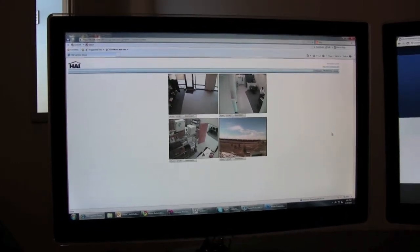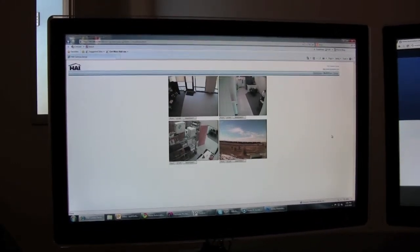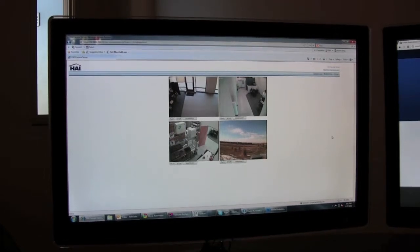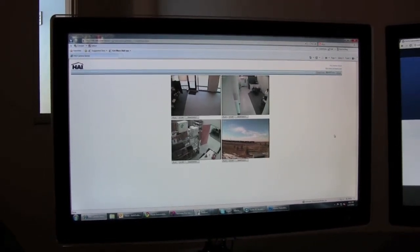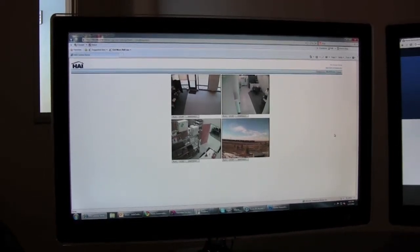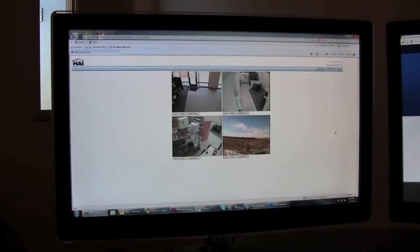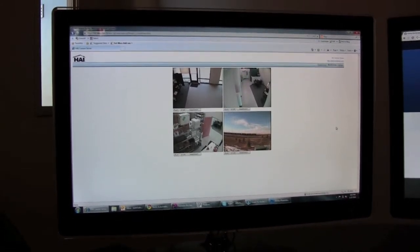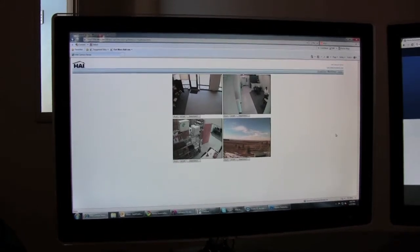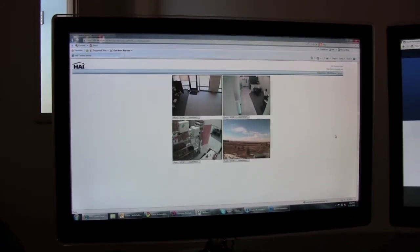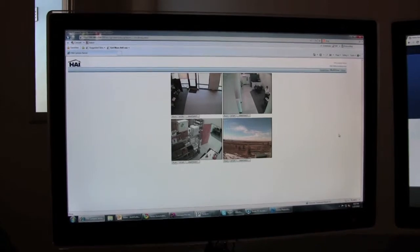The camera feeds are also available online. We can give your server an easy-to-remember web address, allowing for convenient remote access. Rest assured, your server and its images are password protected. Here is an example of the online interface. You can see we have a multi-view viewing simultaneously of all four of our cameras.